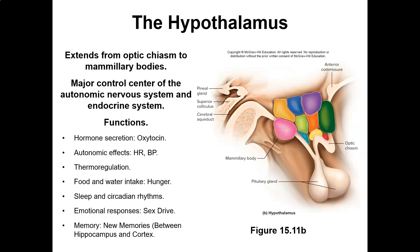The hypothalamus extends from the optic chiasma to the mammillary bodies and provides major control of the autonomic nervous system and endocrine system. It secretes oxytocin, responsible for childbirth. It regulates heart rate and blood pressure, thermal regulation, food and water intake, hunger, sleep and circadian rhythms, emotional responses, sex drive, and memory formation between the hippocampus and cortex. If a patient has damage to the hypothalamus, all of this would be affected. You'll understand these areas better when we discuss motor learning. How do you know where the damage is? Read the medical chart, the MRI, and the CT scan.